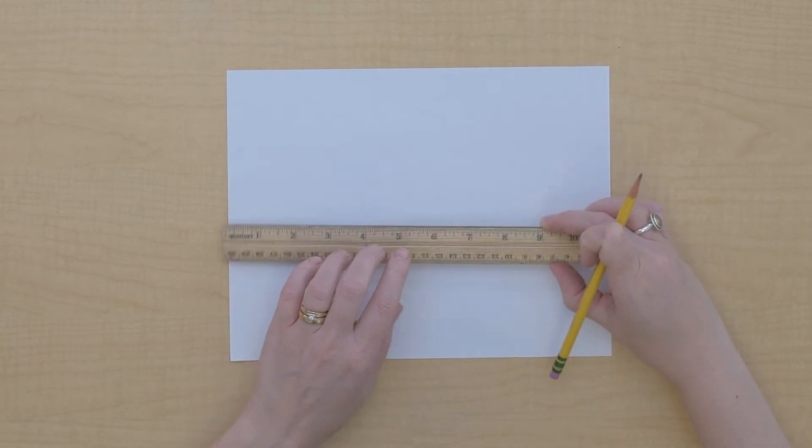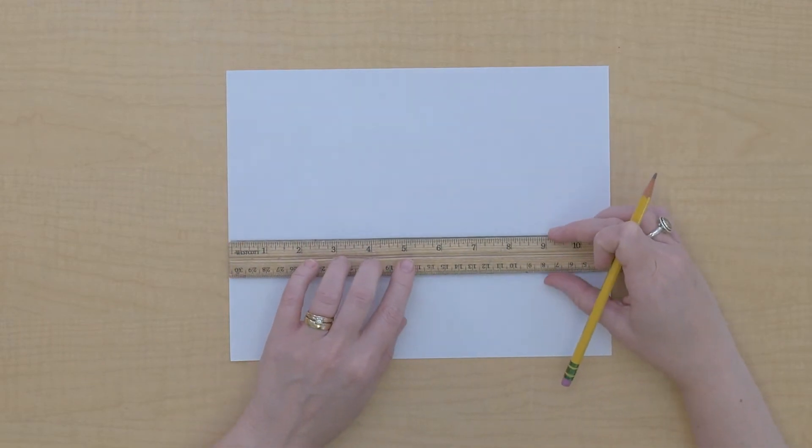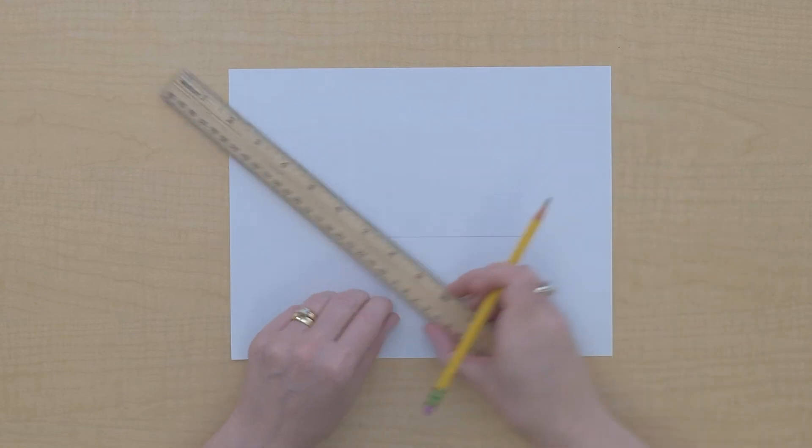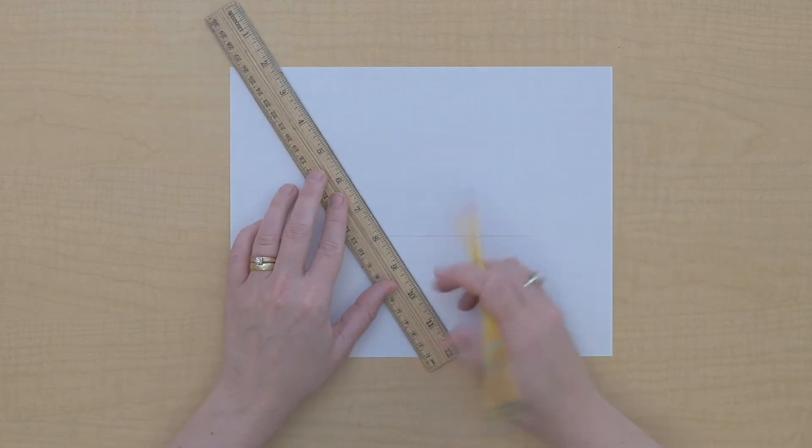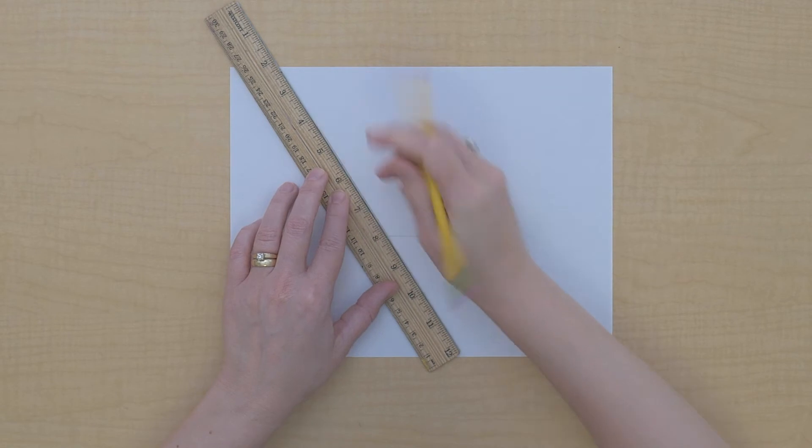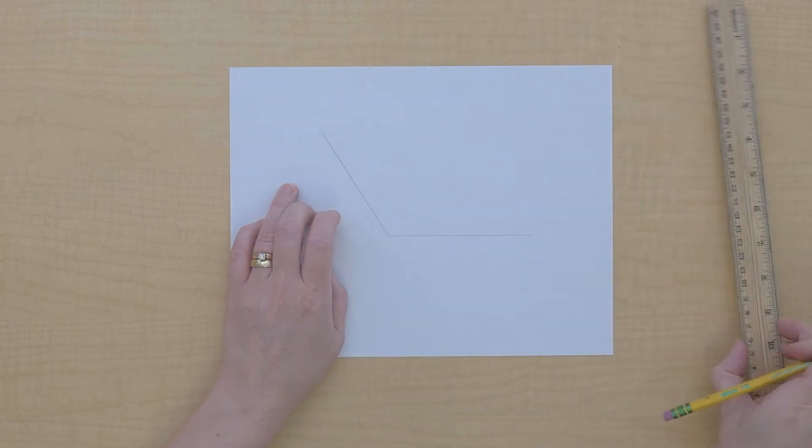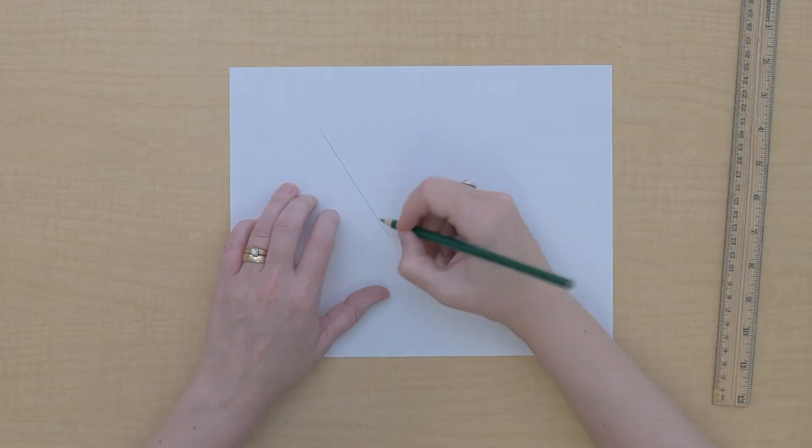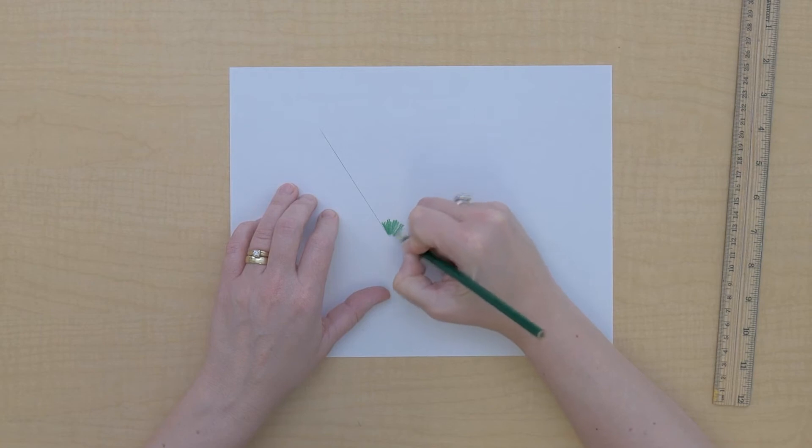So I'm going to draw an angle on this paper. And I'm going to really color the angle that we're going to measure.